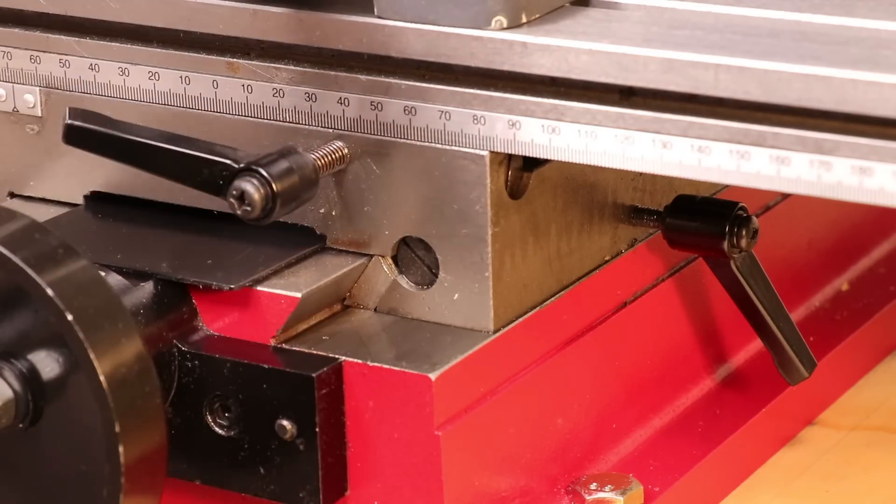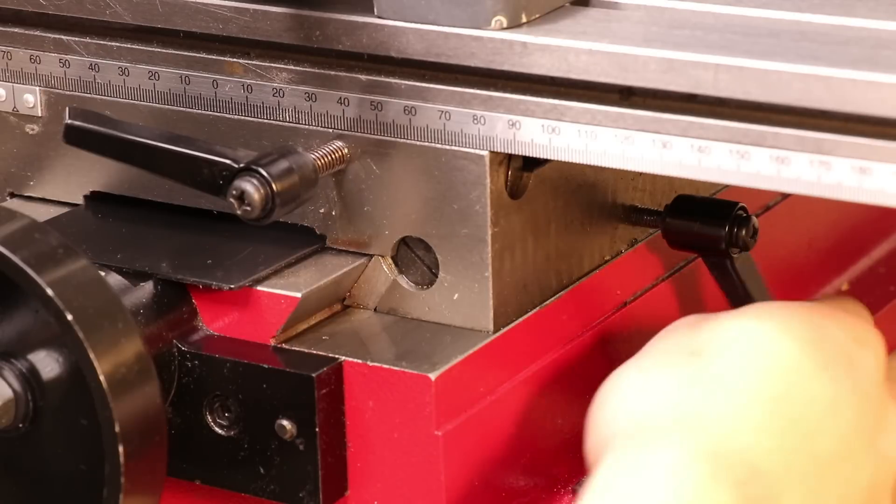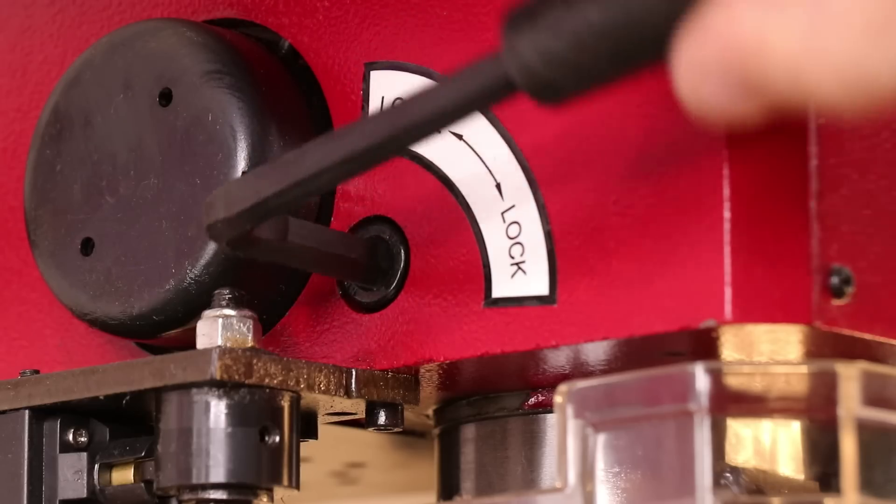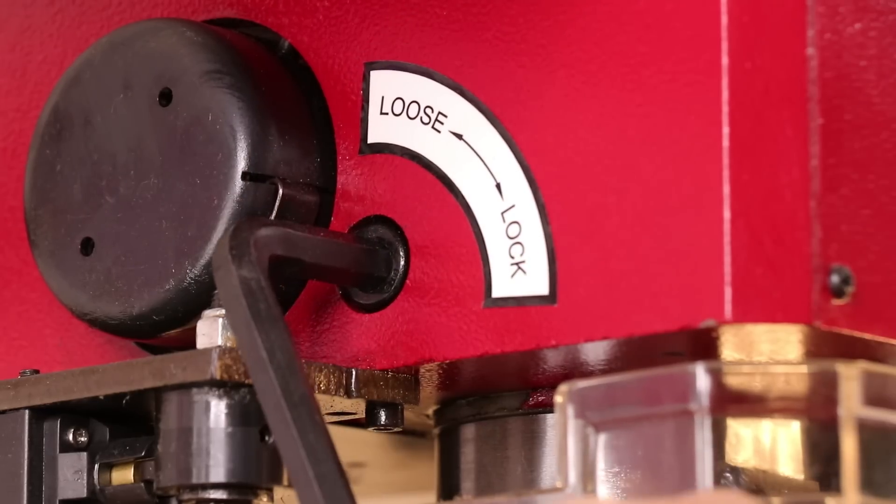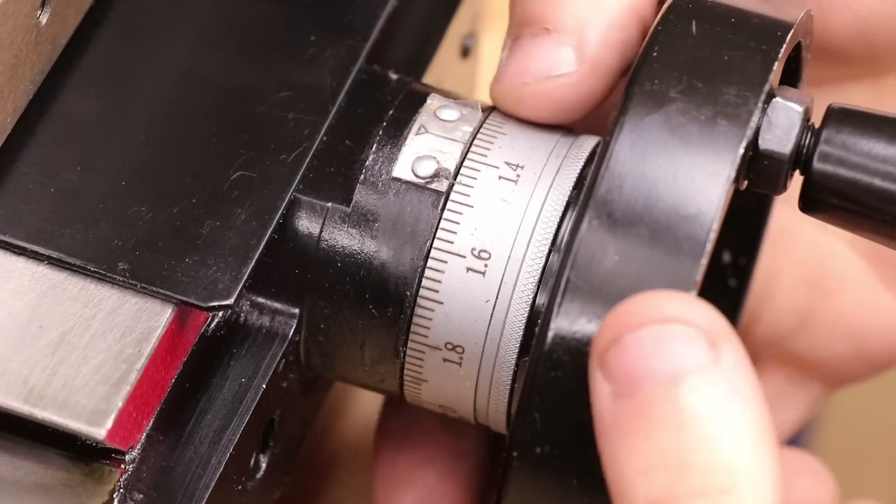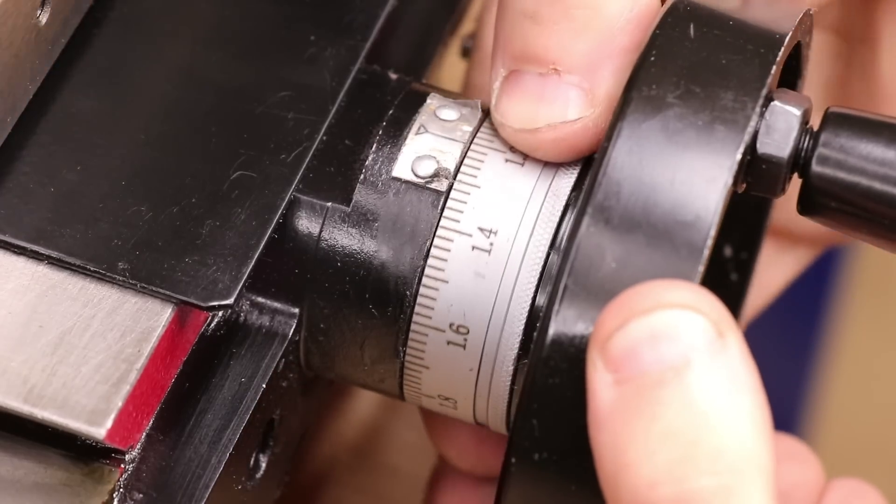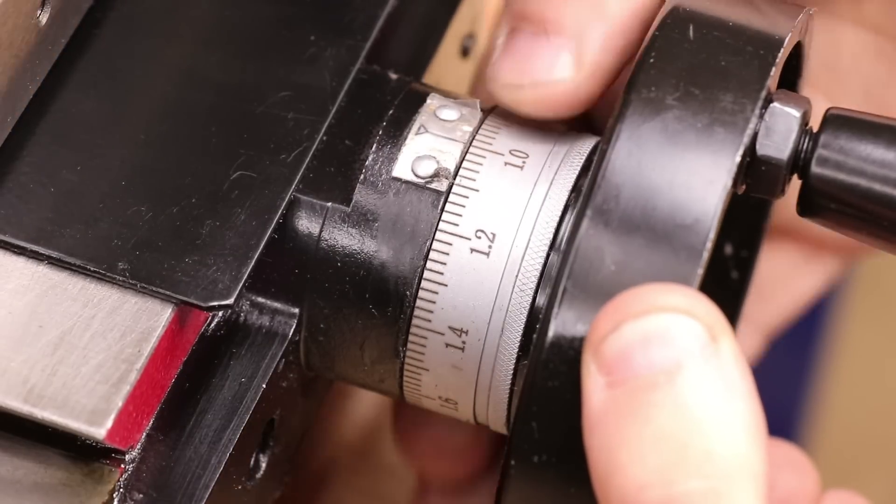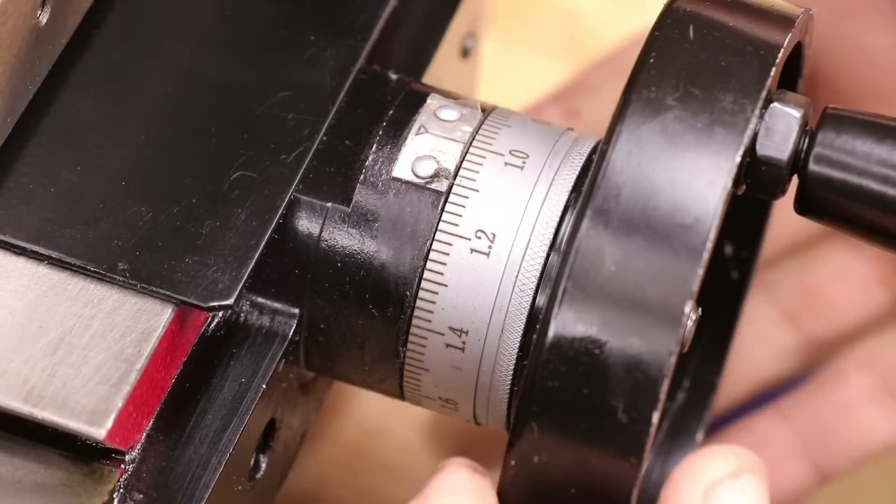Each slide is equipped with a lock, and my only real complaint here is the quill lock, which is just a hex bolt. I'd prefer it to have a handle, but that should be an easy fix. Surprisingly, the handwheels are actually made from metal, and each of them has settable dials, and the action is really smooth.